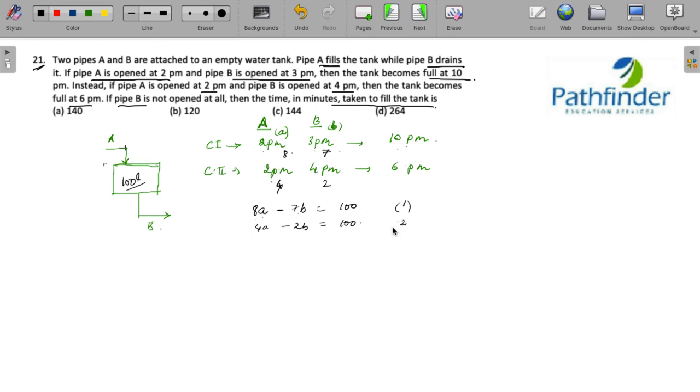4A minus 2B equals 100 is the second equation. If you multiply the second equation by 2, you get 8A minus 4B equals 200. Equation 3 minus equation 1 gives 3B equals 100, so B is 100 by 3.